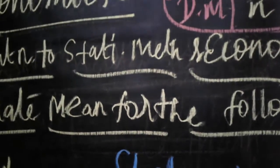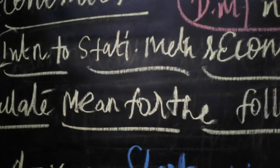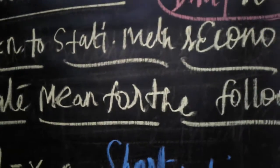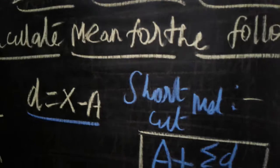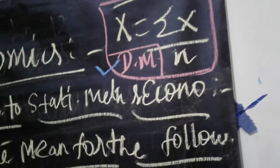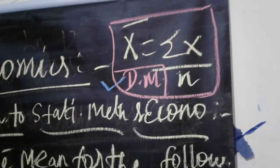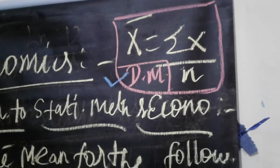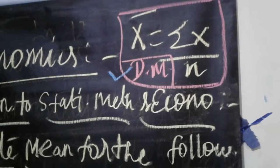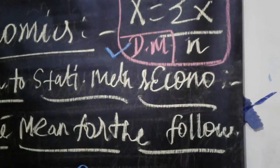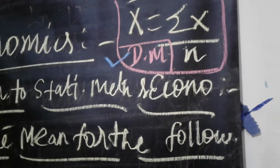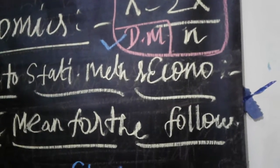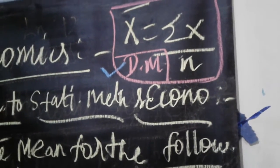Yesterday we saw how to calculate mean for the following data using the direct method. The formula for the direct method is x̄ = Σx / n — we add each x value and divide by the number of values n to get the x̄ value. That was yesterday's topic.